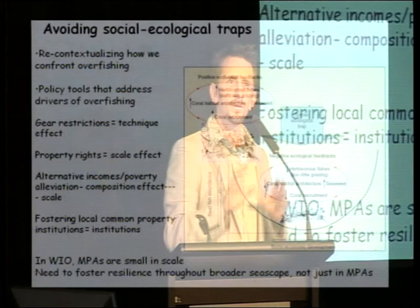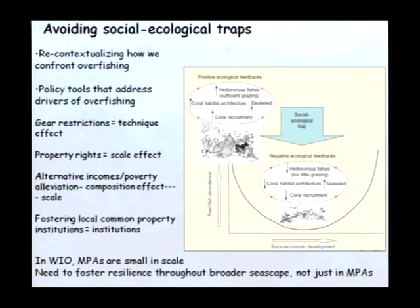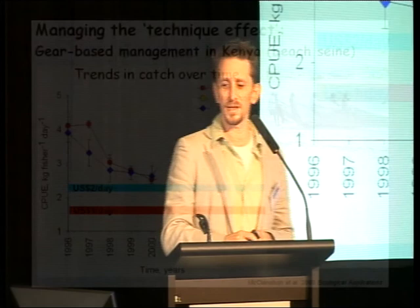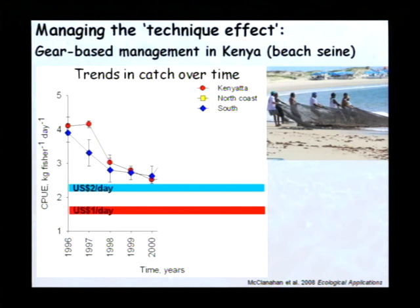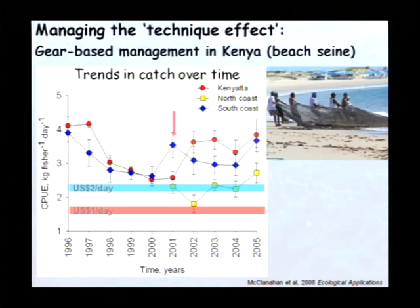We need to be developing policy tools that address the critical drivers of overfishing — that address elements of the technique effect, the scale effect, strengthen institutions, and address the composition effect. For example, you can see about a 40% decline in five years in catch from a couple of landing sites in Kenya — that's around $2 a day, and it's hard to get by on $2 a day in Kenya. In 2000 and 2001, several local landing sites decided to start enforcing national legislation restricting beach seine nets, and there was a dramatic turnaround in these declining stocks where this was done. It's gone from about $2 a day to $4 a day — and while we can still say catch rates are low, the difference between $2 and $4 a day is quite substantial.